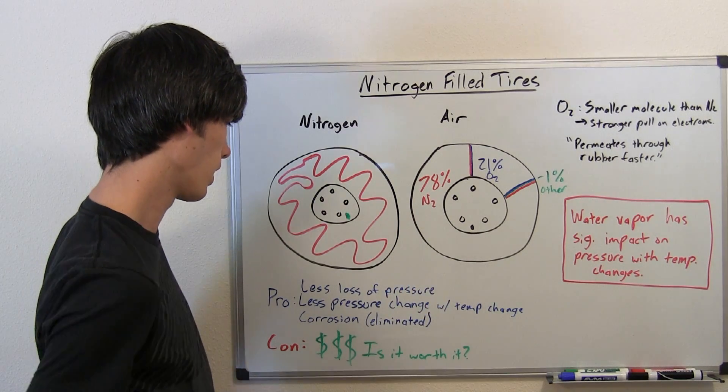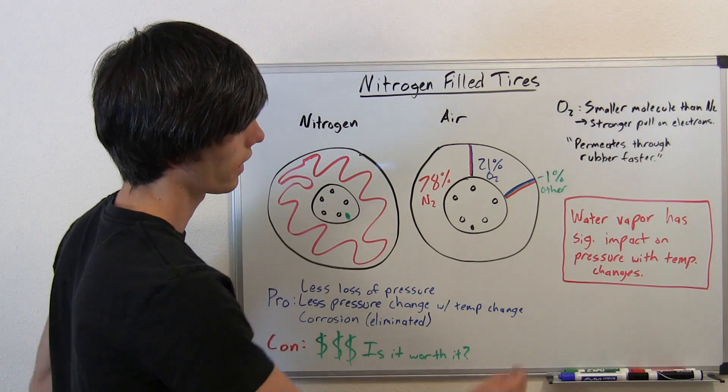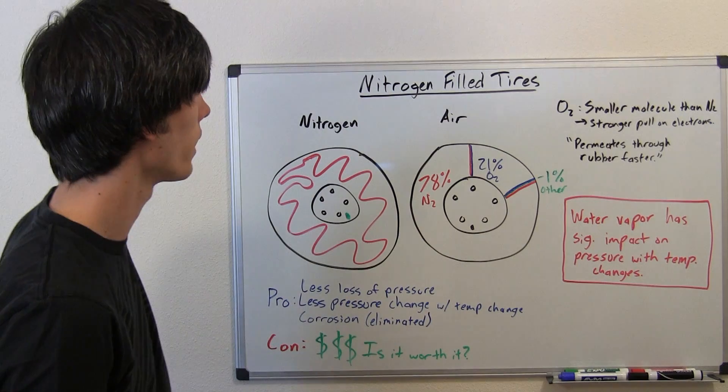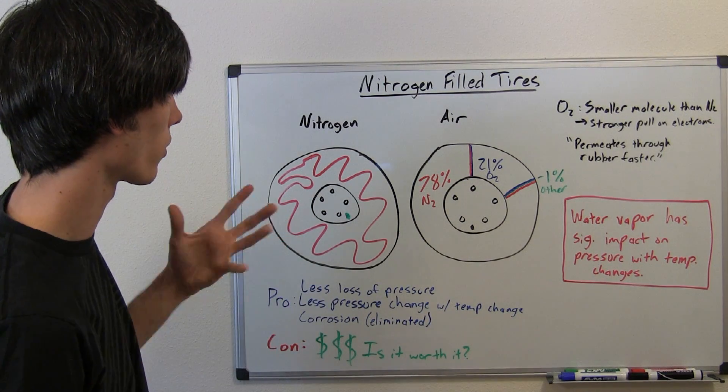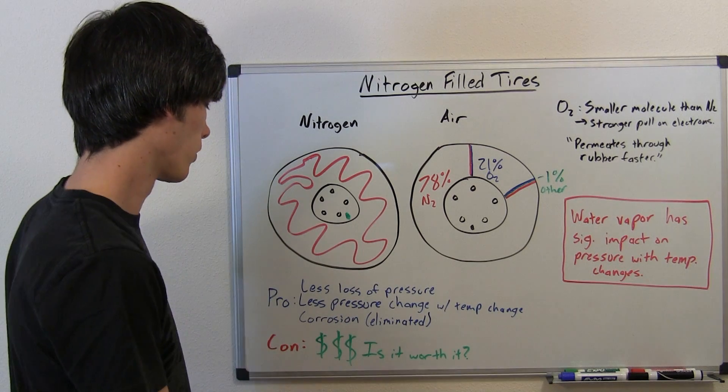I don't think loss of pressure is the big deal. I think it's the less pressure change with temperature change, and that's because of the water vapor inside of it. So if you were to put dry air in your tires, really, I don't think there'd be much difference between that and nitrogen.